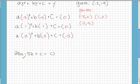1 squared is just 1, so we get a plus b plus c is equal to 0. A times 0 is just 0. B times 0 is just 0. So the last equation is c is equal to negative 5.